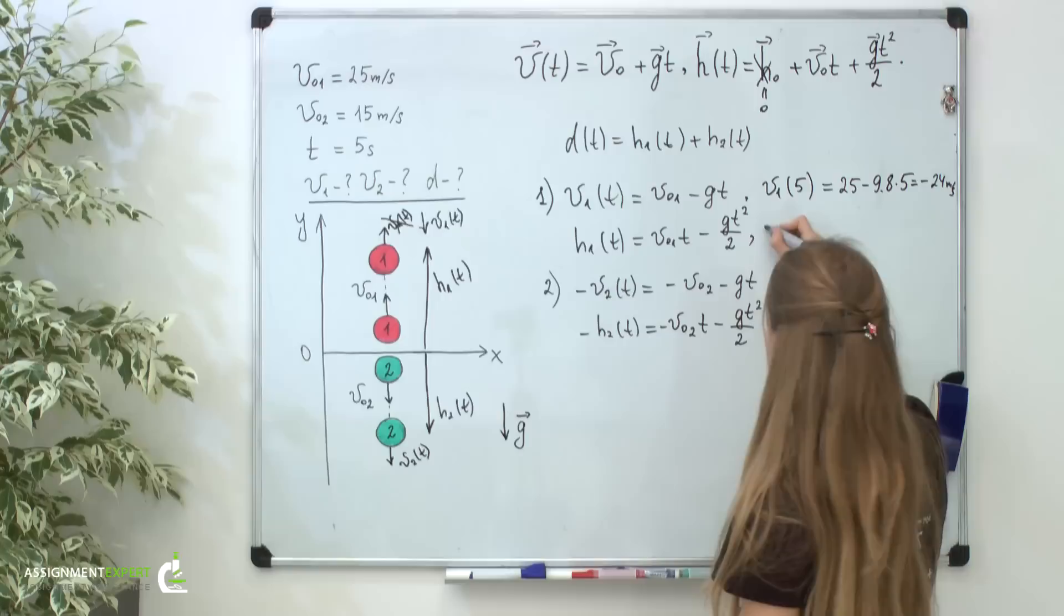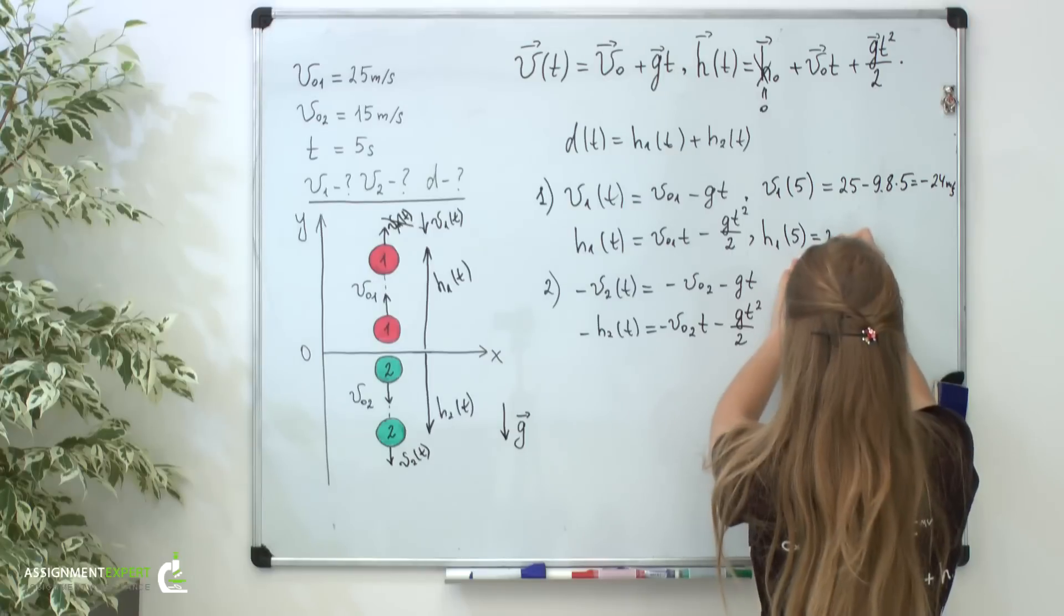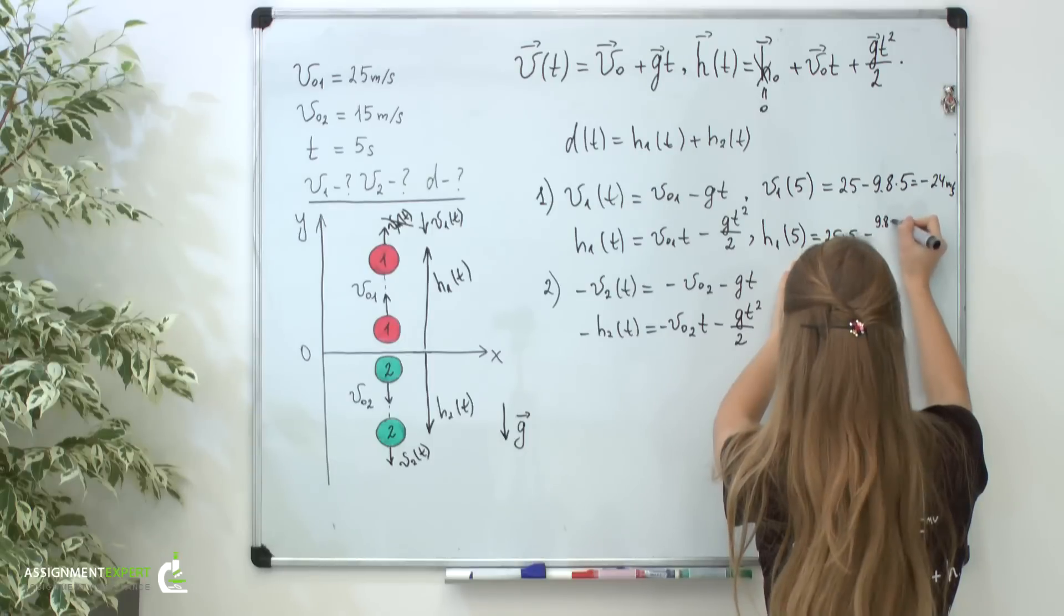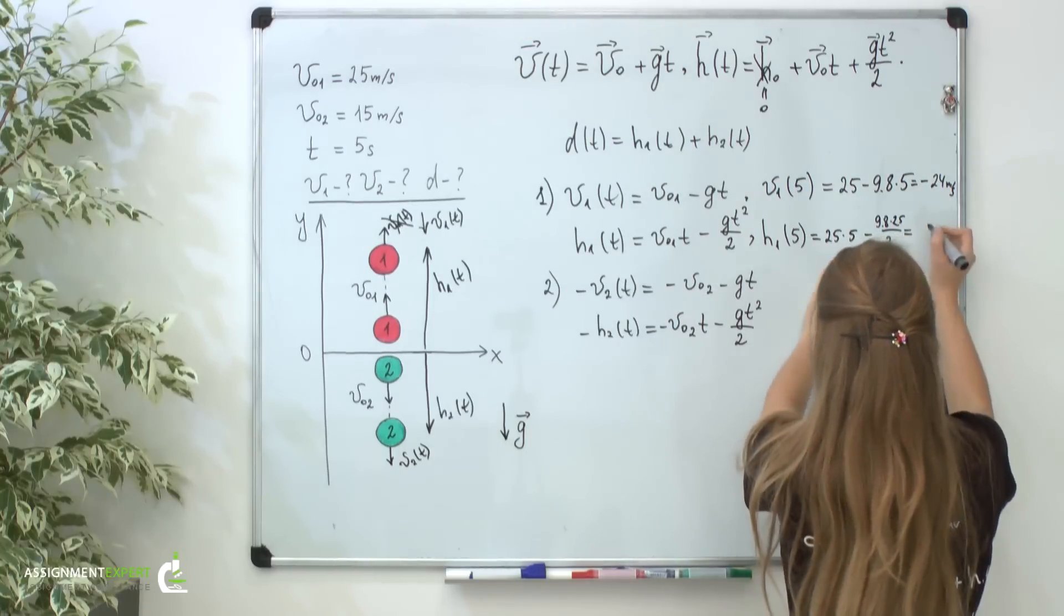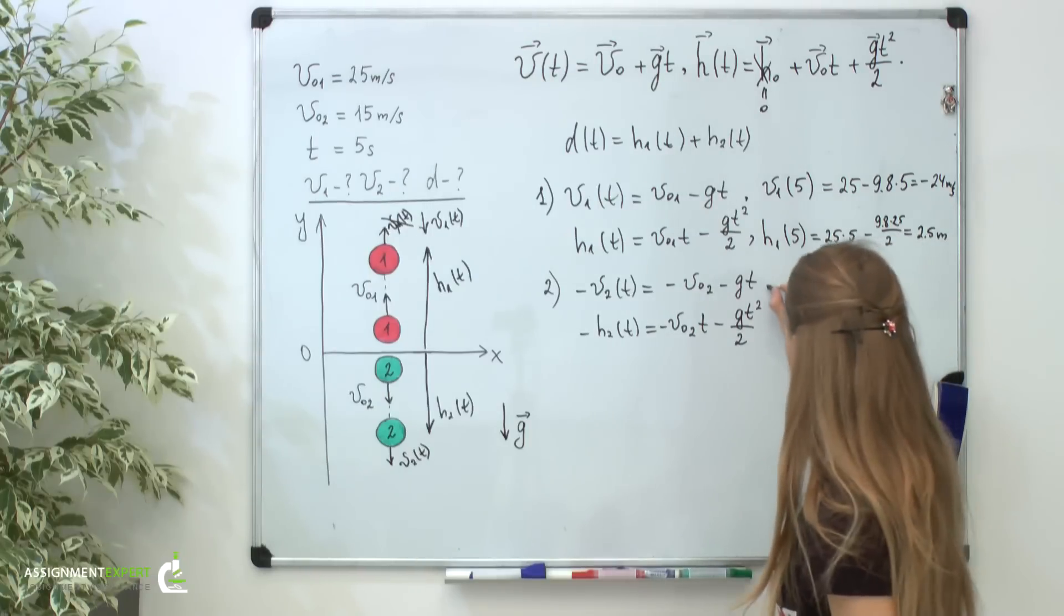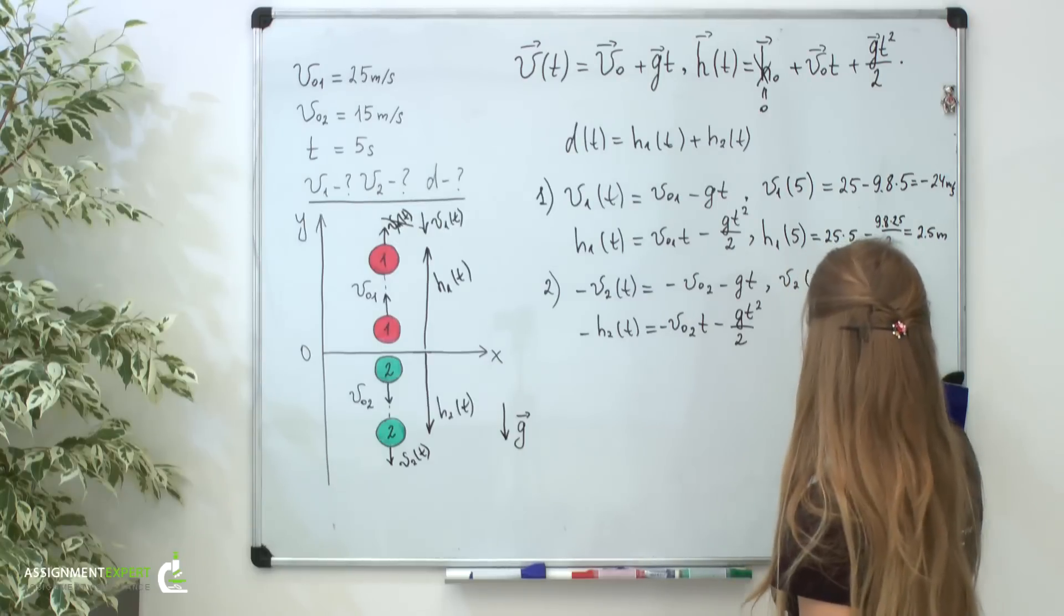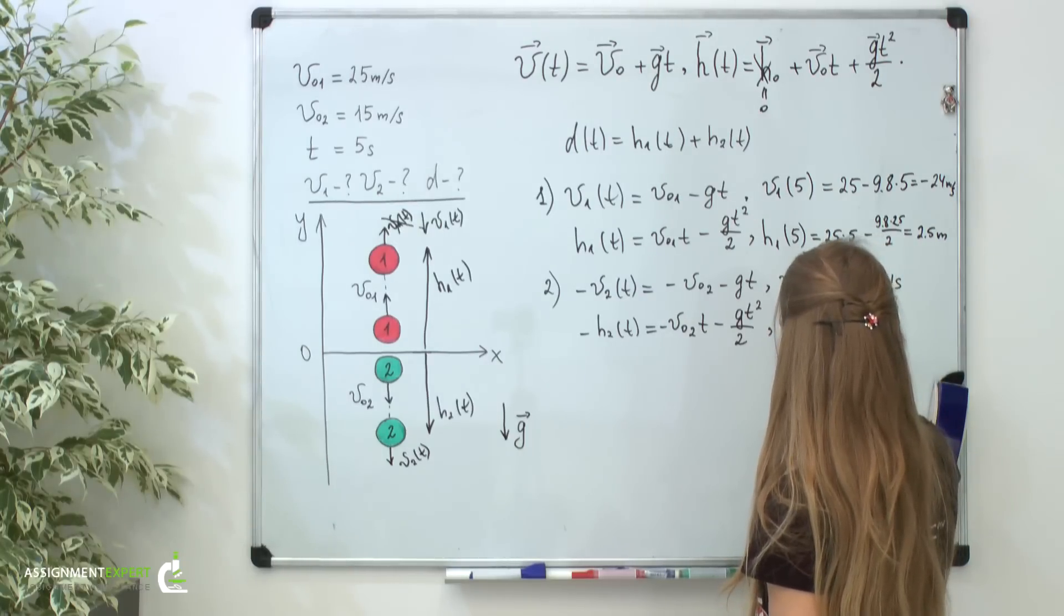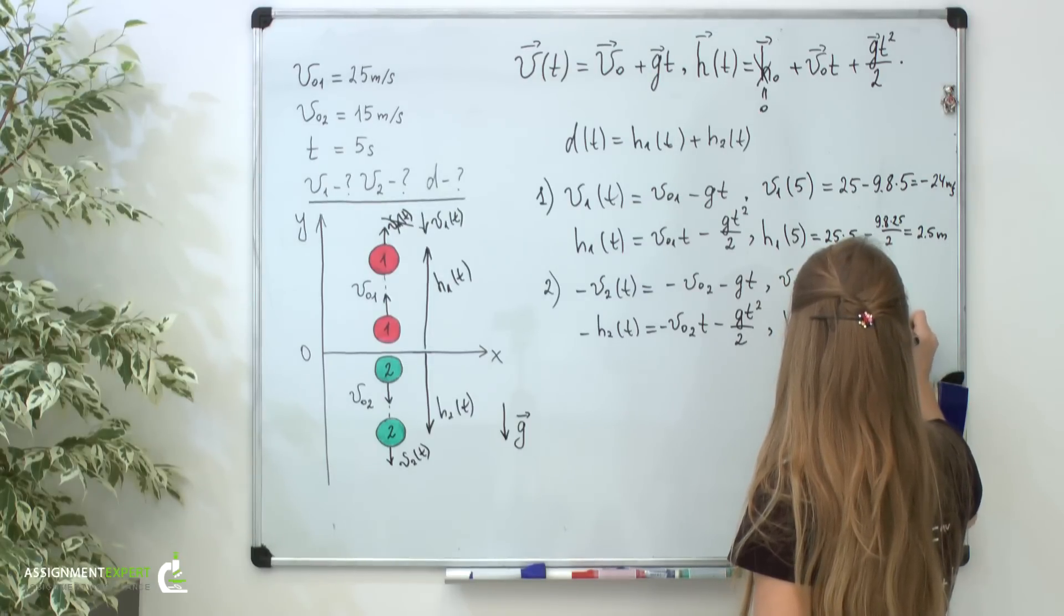Let's calculate the distance. The distance at 5 seconds equals 25 times 5 minus 9.8 times 25 divided by 2, which equals 2.5 meters. Similarly, it's easy to compute the second velocity at the same time and it will be 64 meters per second. And the distance h2 at 5 seconds is 197.5 meters.